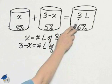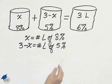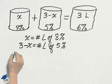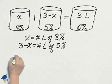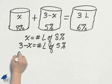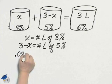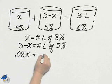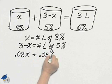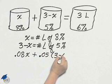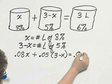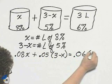I get 3 liters of 6% solution. The actual amount of acid is the percent 0.08 times X plus the percent 0.05 times 3 minus X equals the percent times the number of liters.